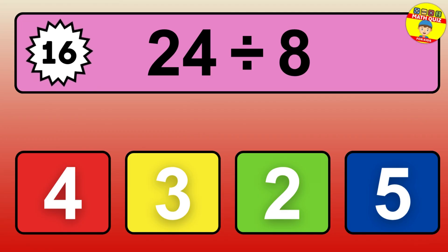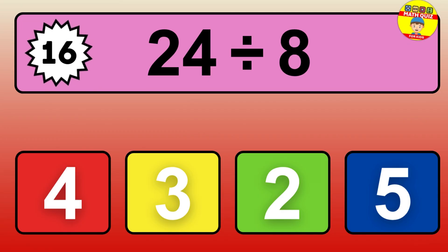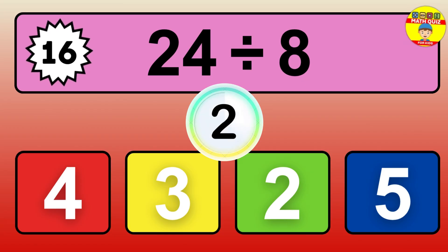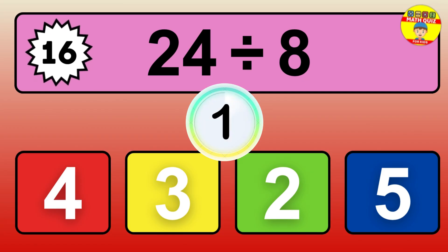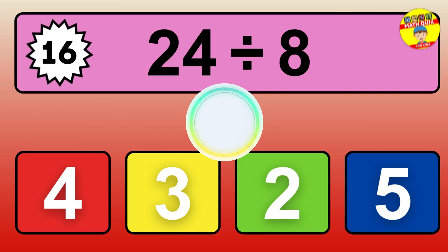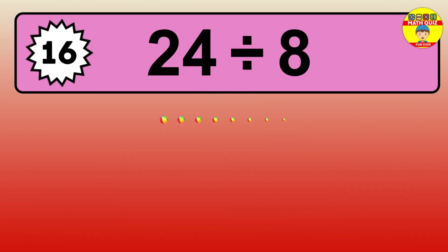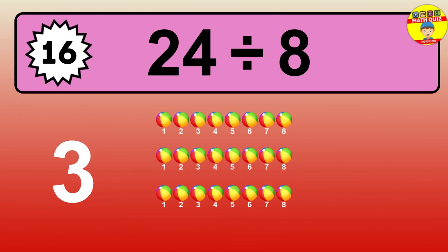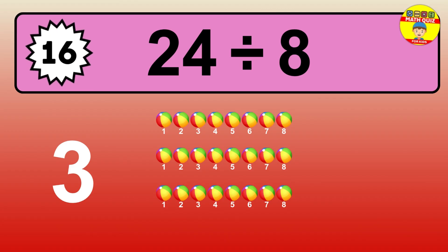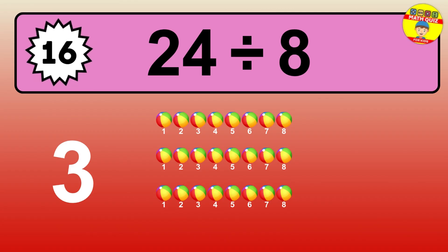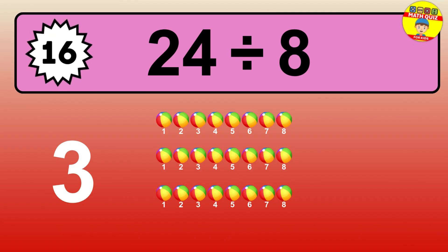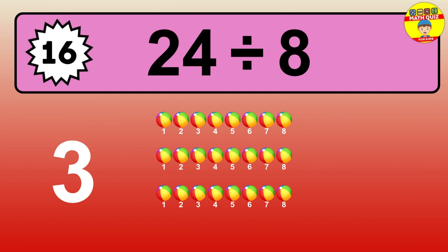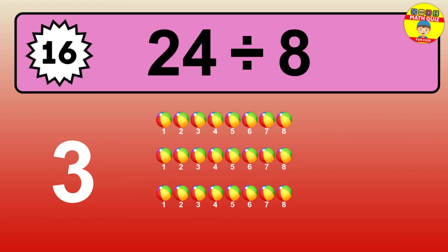15 divided by 3 — time to think. Let's go to the solution. Divide the number 15 by 3. Each group contains 3 units, so dividing 15 by 3 results in 5 equal groups. Thus, the result is 15 divided by 3 equals 5.